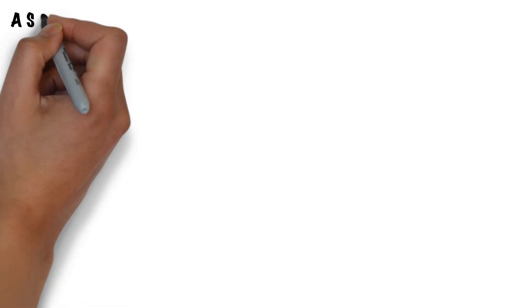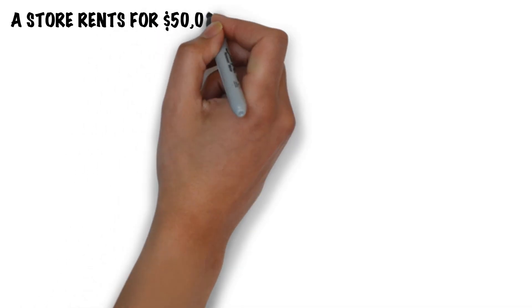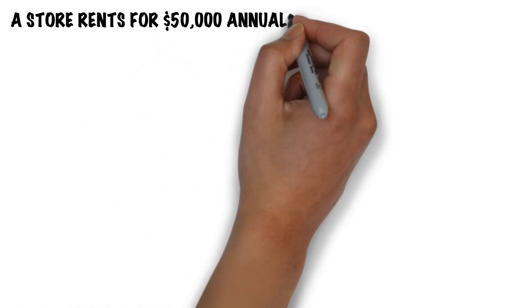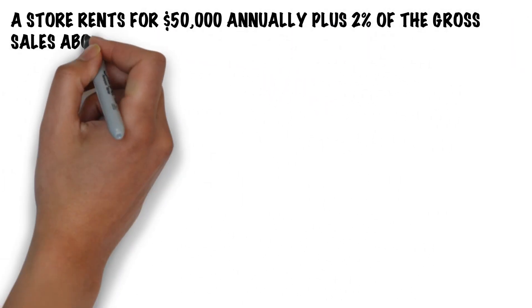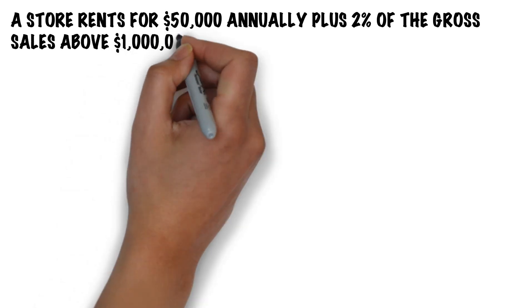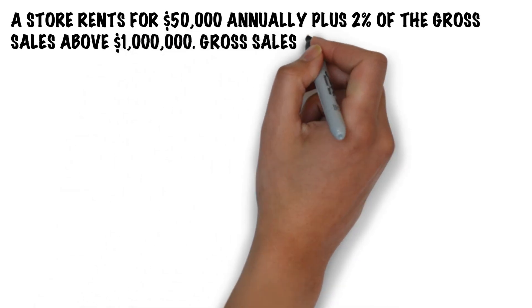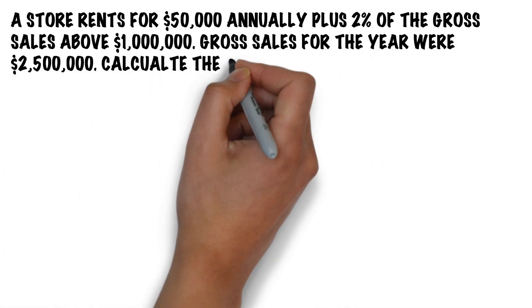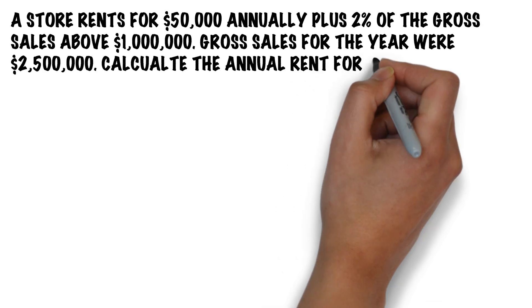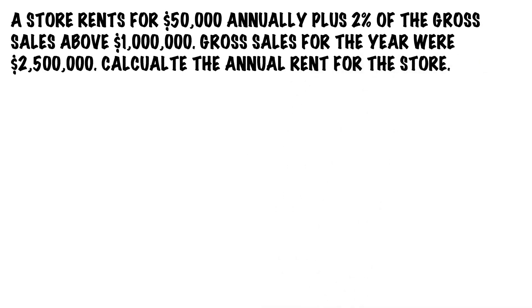That's the answer to the question. Now it's your turn. Here's the question: A store rents for $50,000 annually, plus 2% of the gross sales above $1,000,000. Gross sales for the year were $2,500,000. Calculate the annual rent for the store. Hit the pause button on the video, do your math, and then hit play when you're ready for the solution.